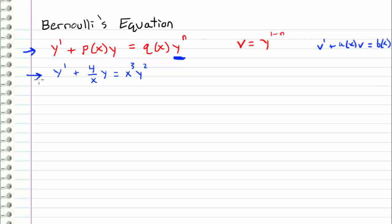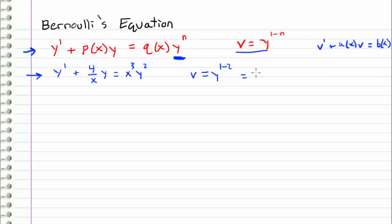Let's take a look at this example. We can see that it fits the Bernoulli equation form because it has a non-linear y squared term attached to it, so we're going to use this change of variables. Here, n is equal to 2 because y is raised to the second power, so we're going to let v equal y to the 1 minus 2, which is y to the negative 1 power.